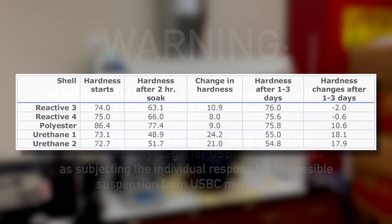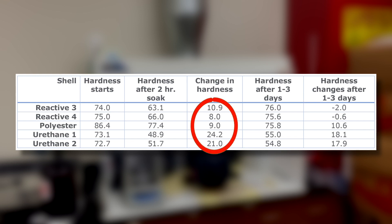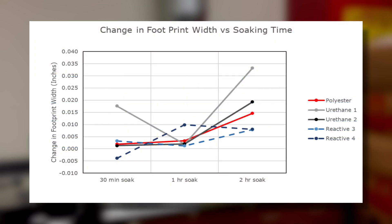The hardness and performance tests showed that after soaking in MEK, urethane balls softened more than polyester and reactive balls. Their footprint, which is defined as the area that contacts the lane, also increased the most of any ball type.